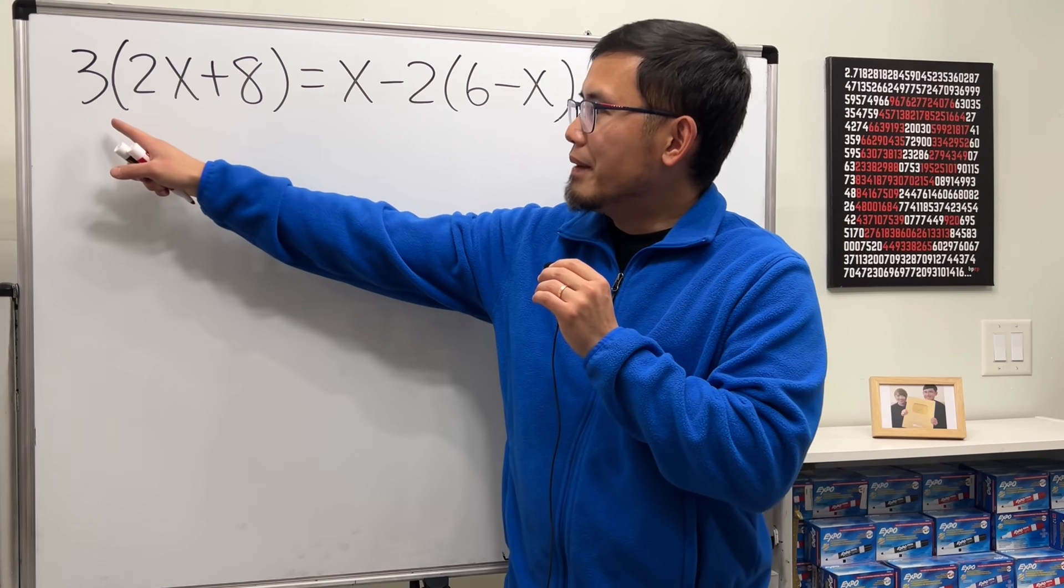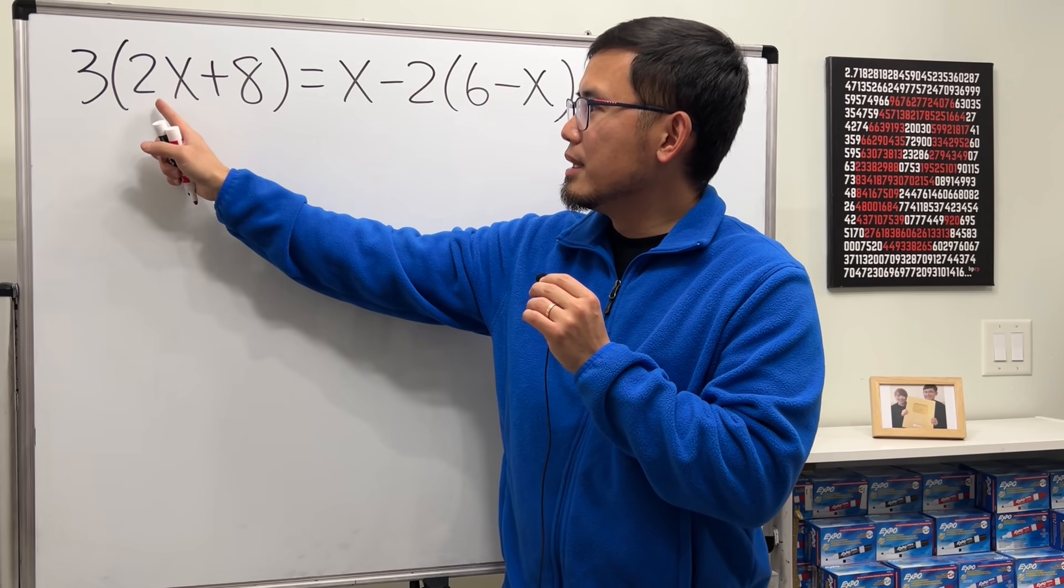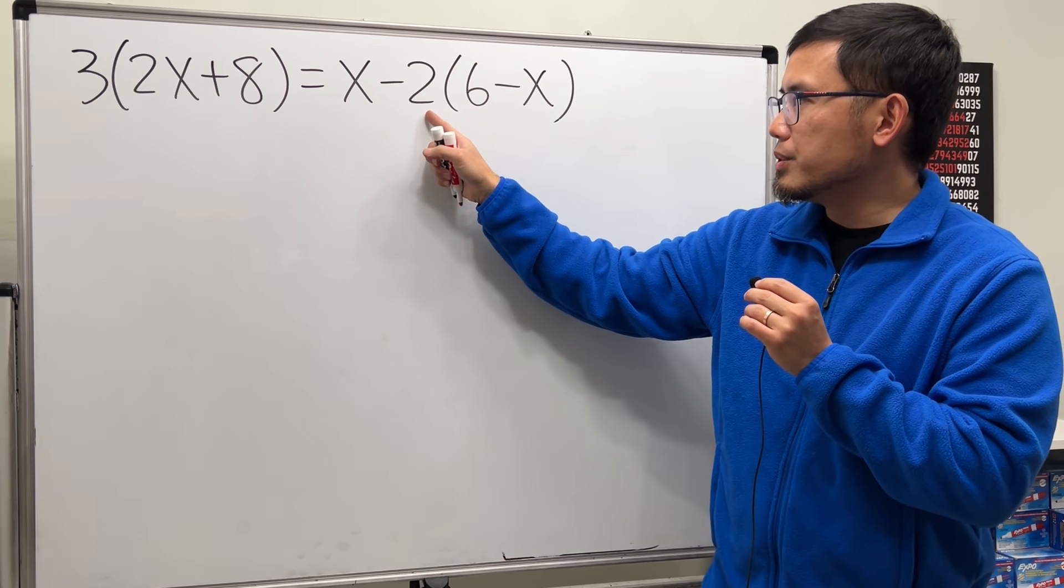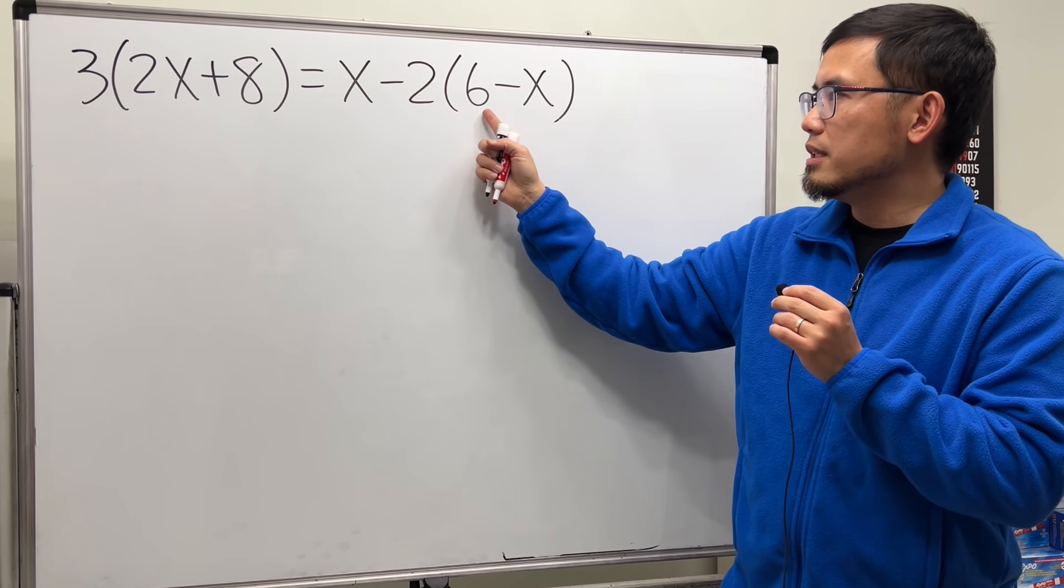Okay, we have the equation 3 times, and here we have a parenthesis, 2x plus 8. That's equal to x minus 2, parenthesis, 6 minus x.